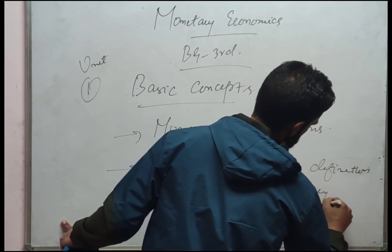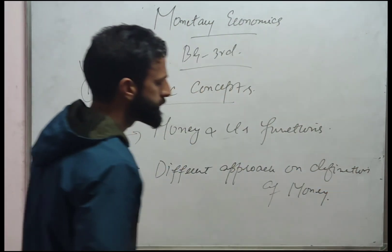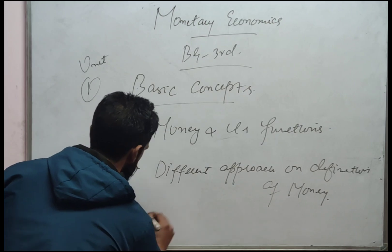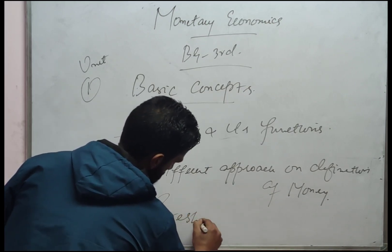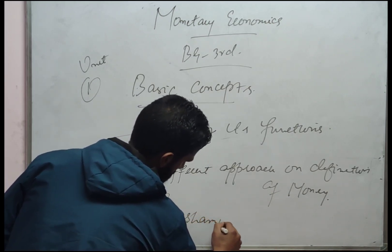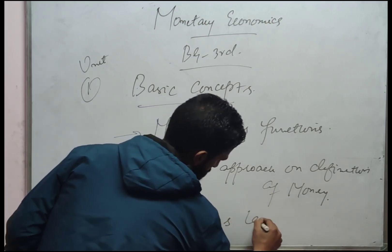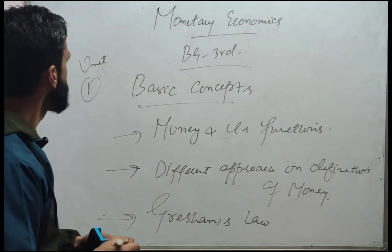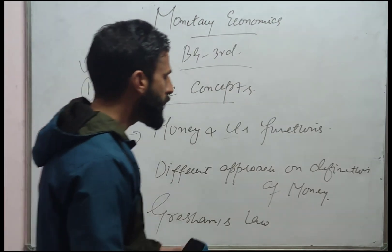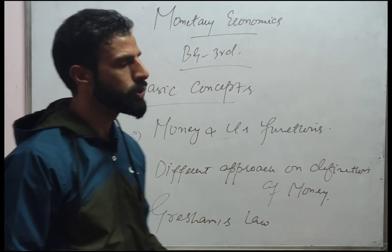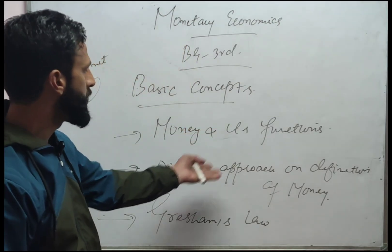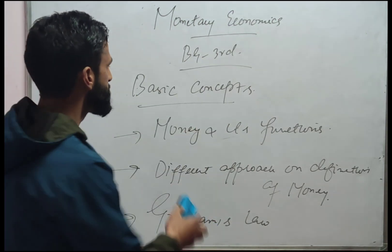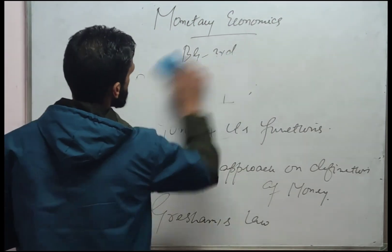The third and last question in Unit 1 is Gresham's Law. So this was Unit 1. Coming to Unit 2, the important questions are: money and its functions, different approaches to the definition of money, and Gresham's Law.